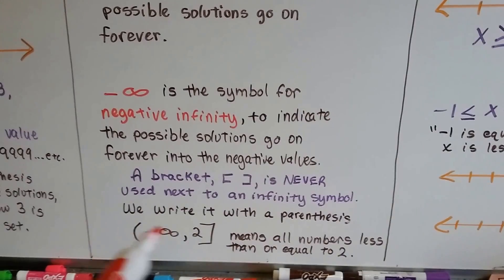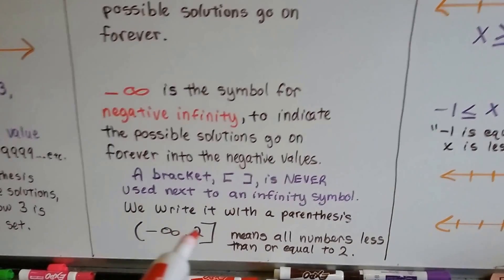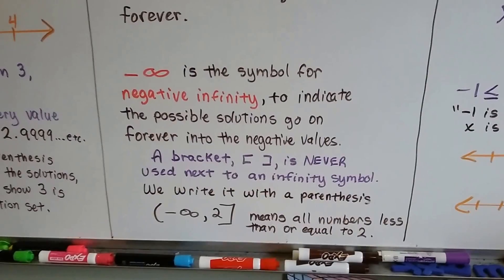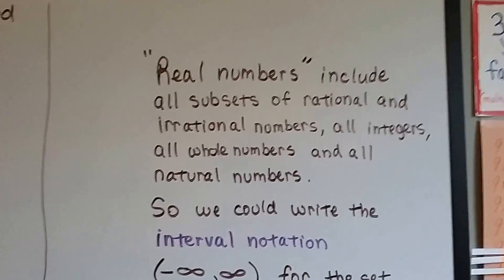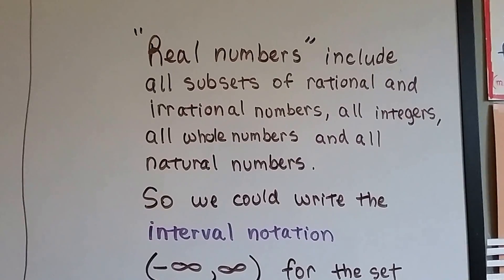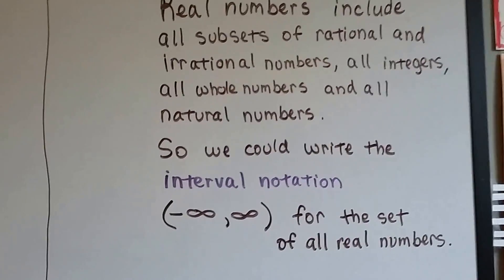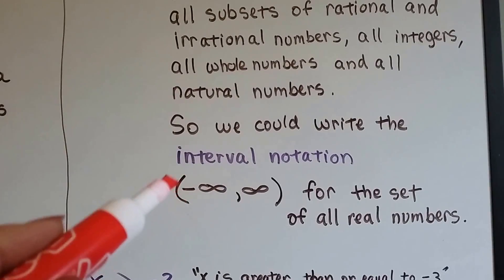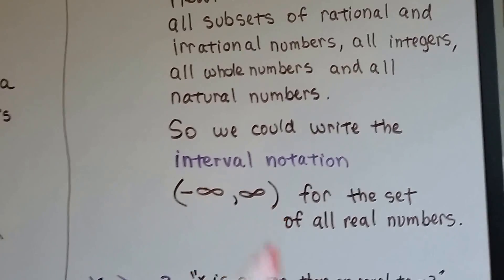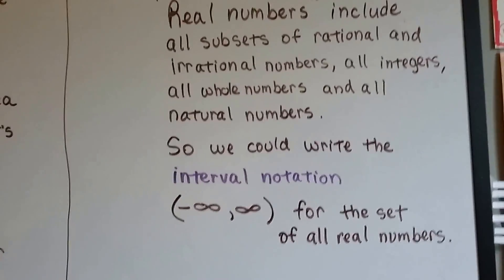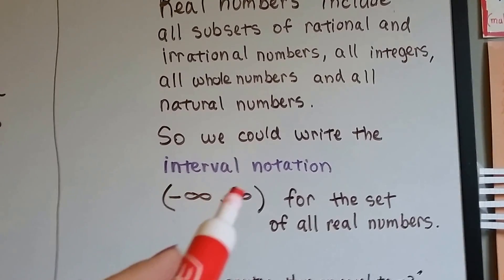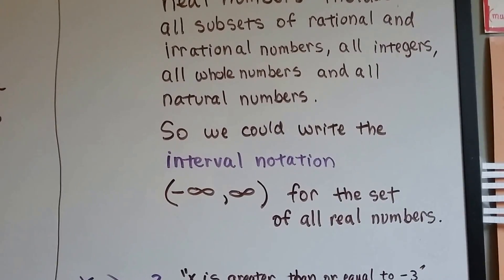This right here means all numbers less than or equal to 2. Because 2 is included, we have the bracket, and all numbers that are less than it go on forever into negative infinity. Real numbers include all subsets of rational and irrational numbers, all the integers, all the whole numbers, and all the natural numbers. So we could write the interval notation as parenthesis, negative infinity, comma, infinity, close parenthesis — and that would be for all the real numbers: fractions, decimals, negatives, positives. Negative infinity comma infinity inside parentheses would be that set.